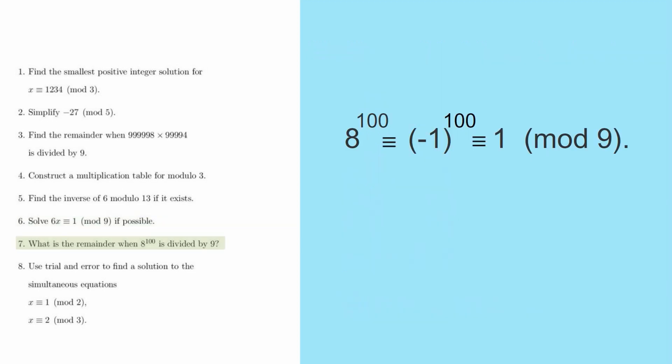Okay, on to doing some big powers in Modulo arithmetic. So the first thing that I must say is that generally I've been saying you can replace numbers by their Modulo. But with powers, you can't replace this 100 by 1. The 100 is really an operation. It's saying multiply a number by itself 100 times. So that doesn't change. But as per usual, we can replace the 8 by negative 1. And once we've got negative 1 to the 100, it's obvious that the answer is 1.